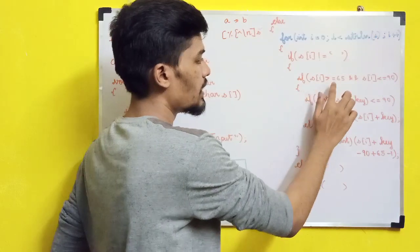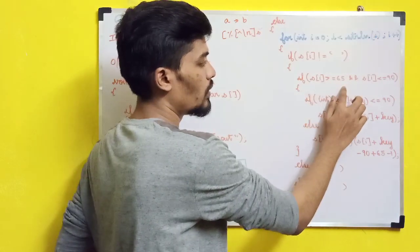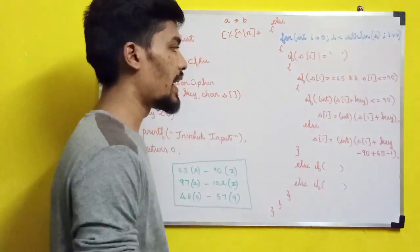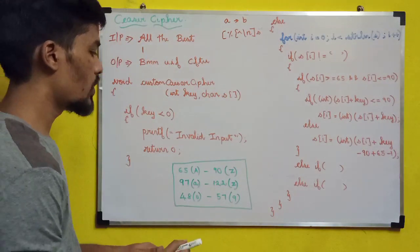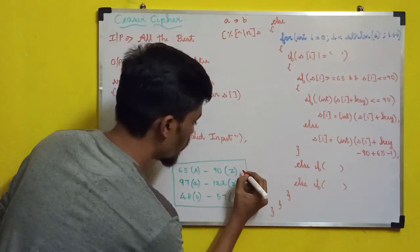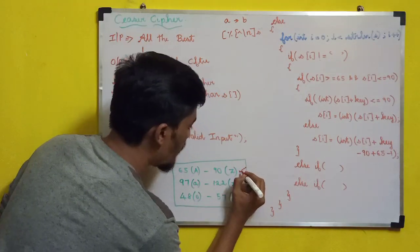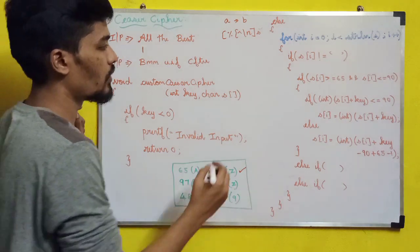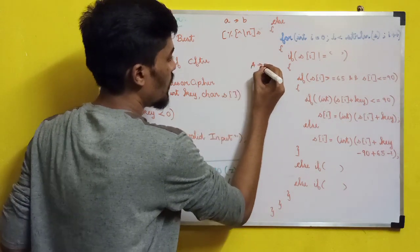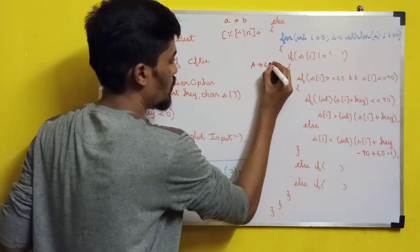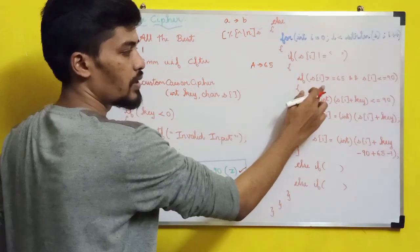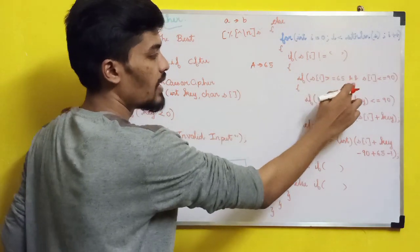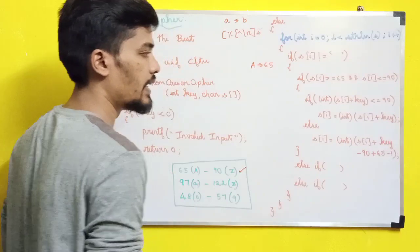So the condition is: s[i] is greater than or equal to 65 and s[i] is less than or equal to 90. This handles uppercase letters. For example, if we have 'A', its value is 65. So 65 is greater than or equal to 65, and 65 is less than or equal to 90 — this condition will be satisfied.